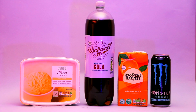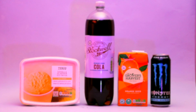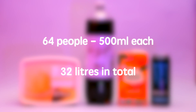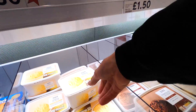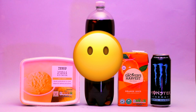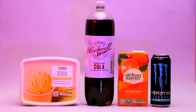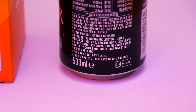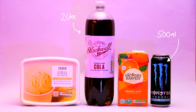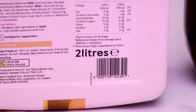It looked great and tasted great. I'm looking to make enough for at least 64 people to have one 500 millilitre drink each, which means I'll need to make at least 32 litres of this mocktail. There's a bit of a problem though — when I was in the shop I noticed that all the container sizes are different for each ingredient. The energy drinks come in cans of 500 millilitres, the coke comes in two litre bottles, the orange juice comes in one litre cartons, and the ice cream comes in two litre tubs.